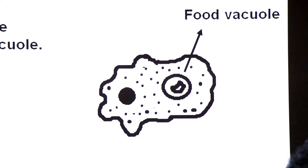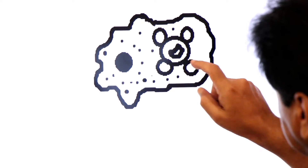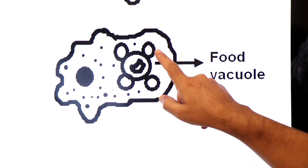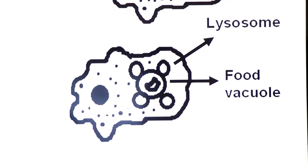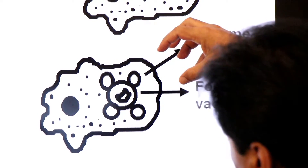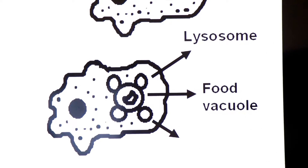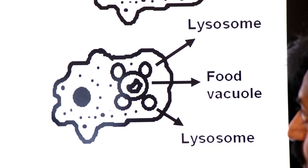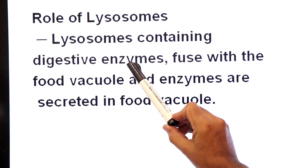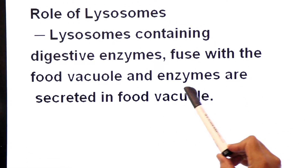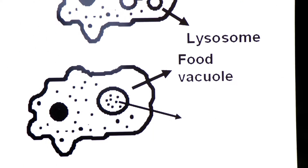Inside the food vacuole, lysosomes discharge their enzymes and intracellular digestion takes place. Lysosomes containing digestive enzymes fuse with the food vacuole and secrete their enzymes — protein-breaking, sugar-breaking, and lipid-breaking enzymes — into the food vacuole. This is how the food is digested inside the food vacuole.